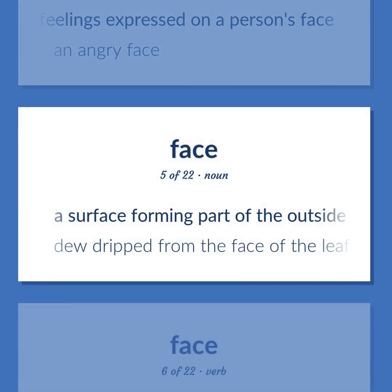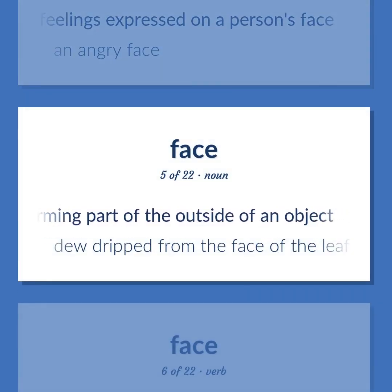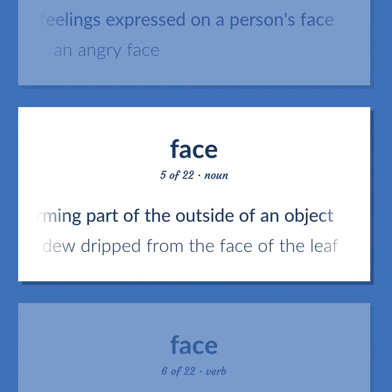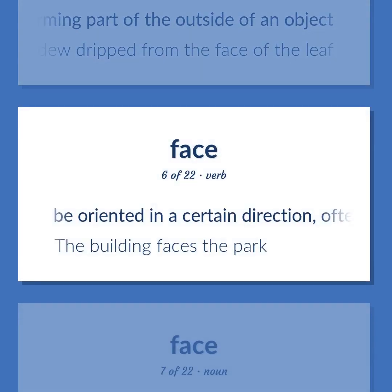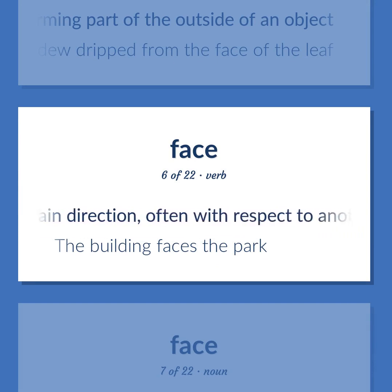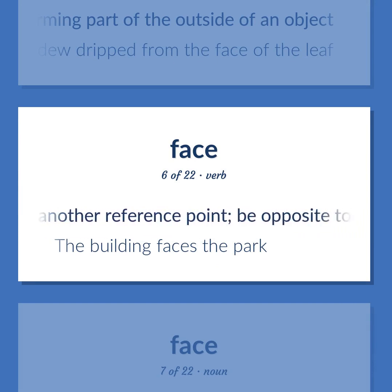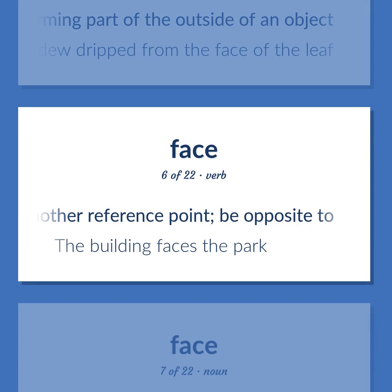A surface forming part of the outside of an object — dew dripped from the face of the leaf. Be oriented in a certain direction, often with respect to another reference point; be opposite to — the building faces the park.